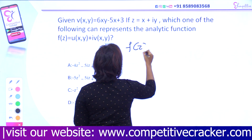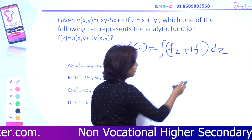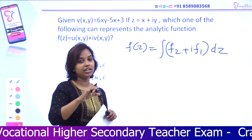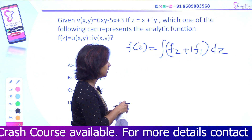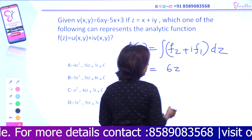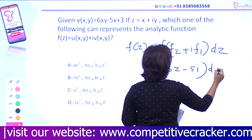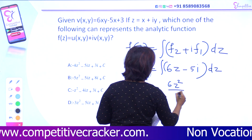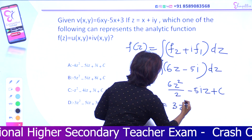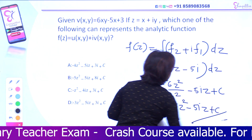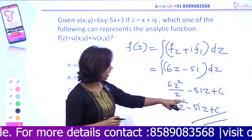So f(z) equals the integral of (f2 plus i·f1) dz. F2 is minus 5 and f1 is 6z — the iota term. Integrating: 6z squared by 2 minus 5i·z plus constant C, which gives 3z squared minus 5i·z plus C. So the corresponding analytic function f(z) equals 3z squared minus 5iz plus C.